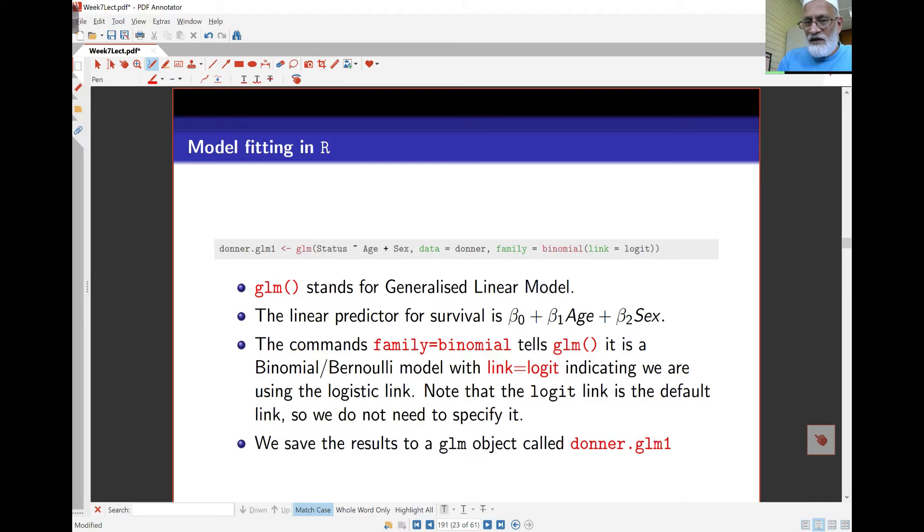I've got next a thing called family. It says family equals binomial, link is logit. I don't need the link parameter - without that, it will still fit the logit by default. So you'll find in my commands, I'll usually just say family equals binomial.